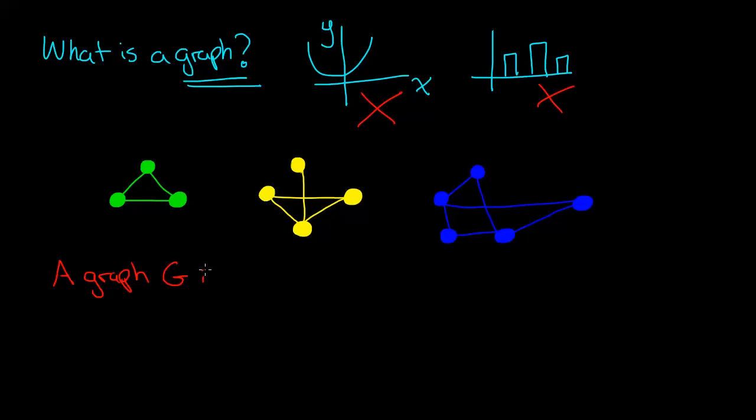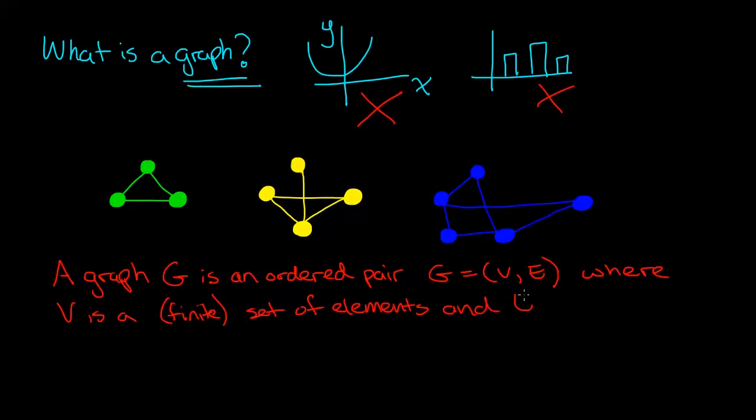Well let's be a little bit more precise to say what we mean. A graph G is an ordered pair, G equals V comma E, where V is a finite set of elements and E is a set of two subsets of V. Sound confusing?